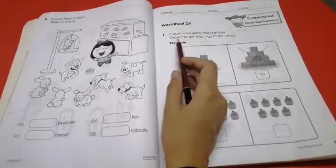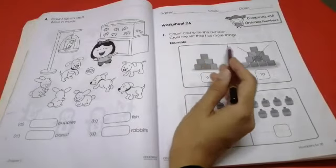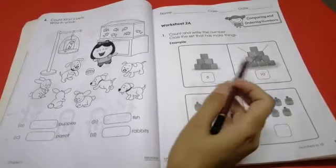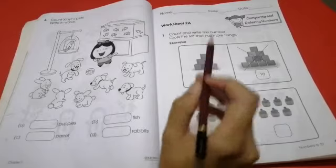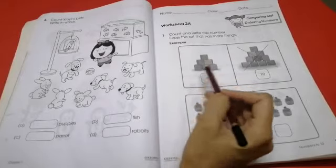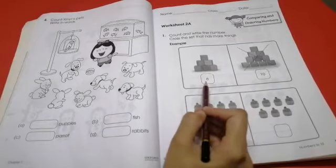We read the first question. Count and write the number. Cross the set that has more things. We have crossed the set in which we have more things. Now we count it one by one. Let's count with me. 1, 2, 3, 4, 5, 6. We have 6 here.